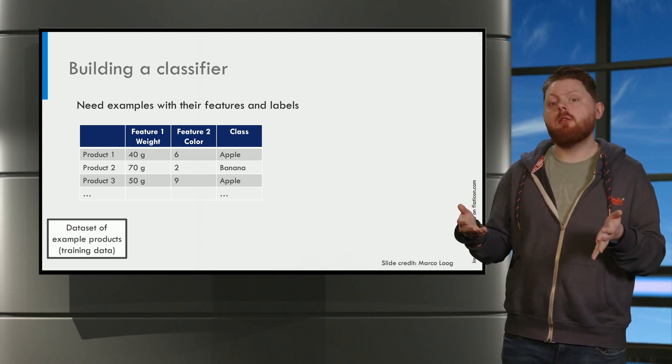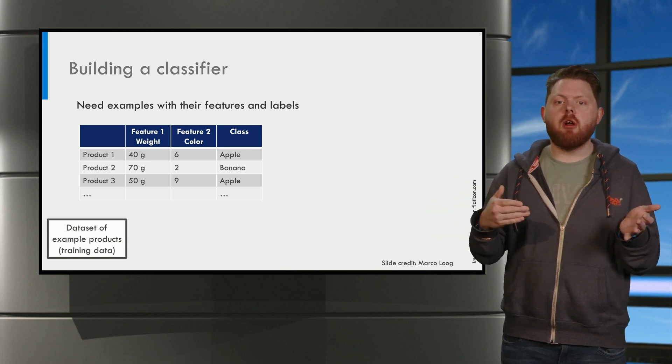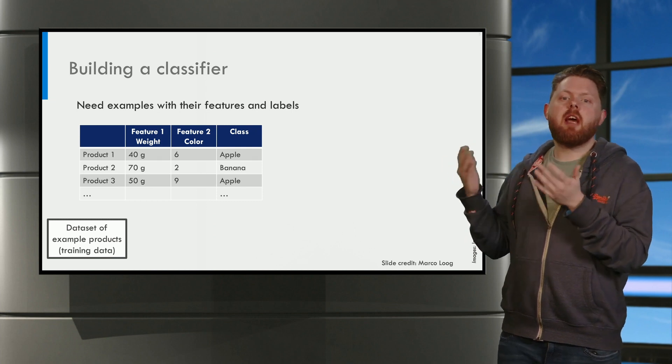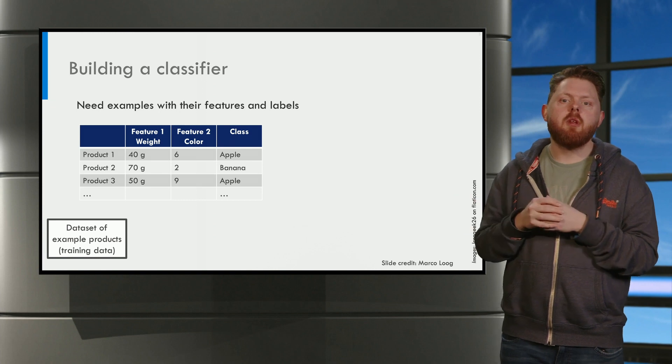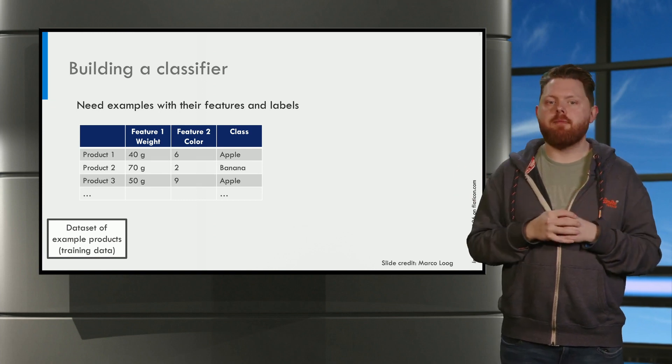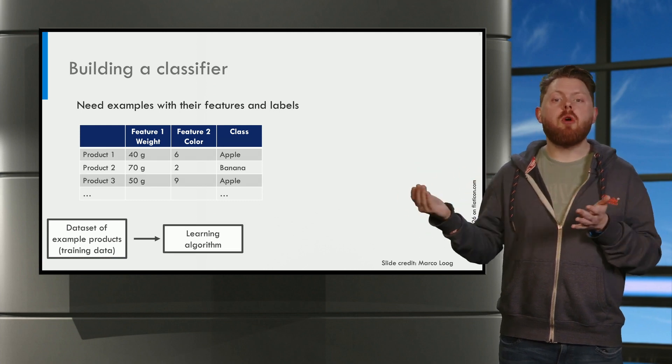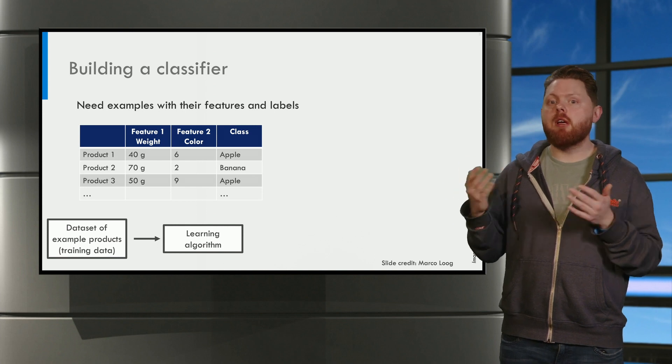You take your sensor, for example, you weigh your products, you measure their color, etc. You make this data set of examples with features and their labels. This will be our training data. This training data is input to our learning algorithm, which tries to come up with a classification model.